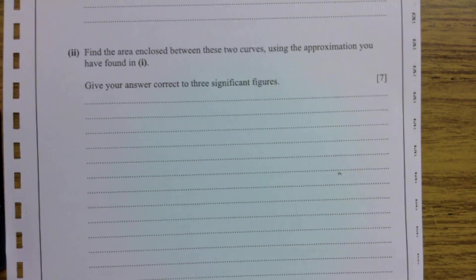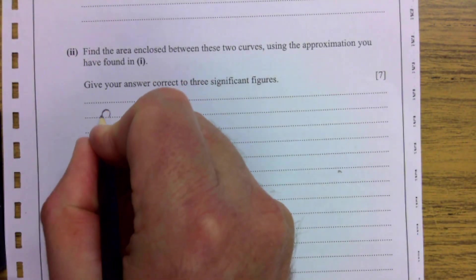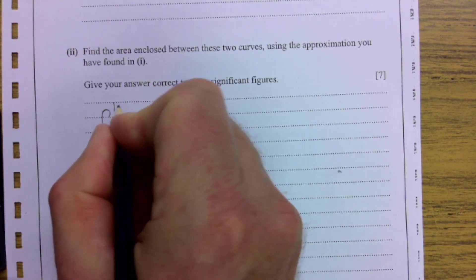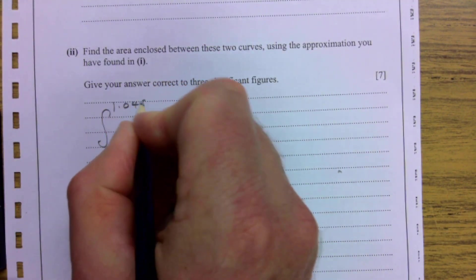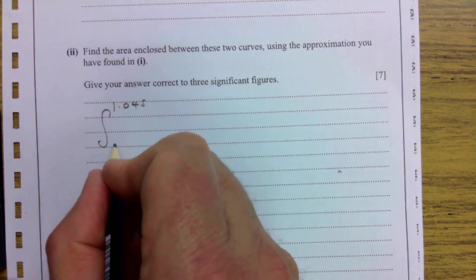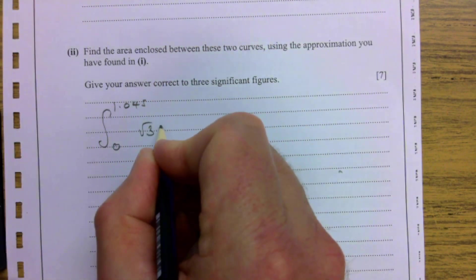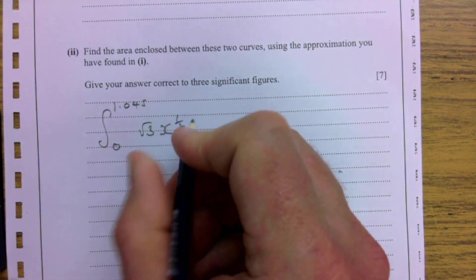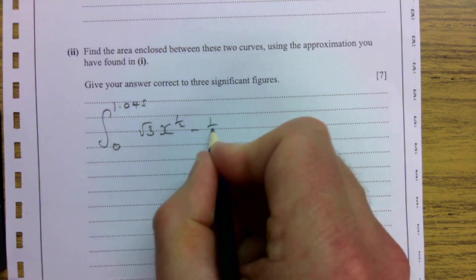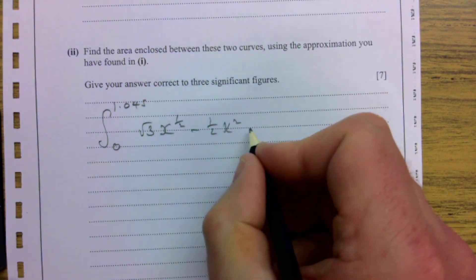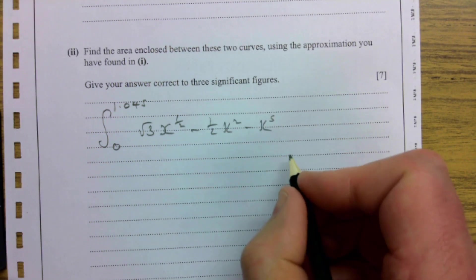So this question is asking me to do the following. It's asked me to integrate between quite an awkward number, 1.045, and then the other one's 0. And my function, as you know, is √3 x^(1/2) - (1/2)x² - x⁵, all dx.